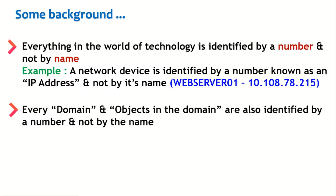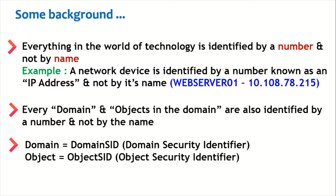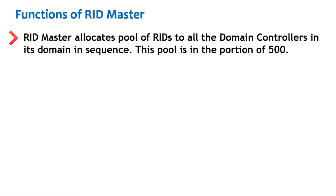Every domain and every object in a domain is identified by numbers and not by names. A domain is identified by a number called the Domain SID, and objects in the domain are identified by numbers called Object SIDs. So we have two numbers: Domain SID for domain identification, and Object SID for object identification in the domain. The function of RID Master is to allocate a pool of RIDs to all domain controllers in the domain in sequence, in chunks of 500.